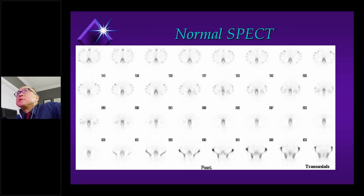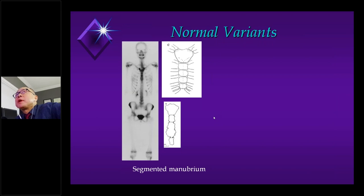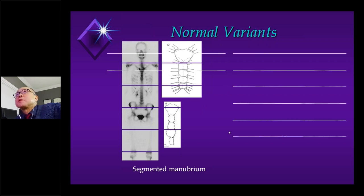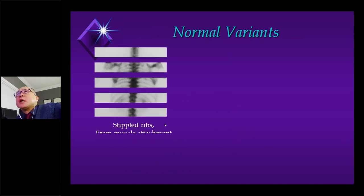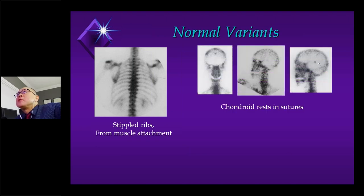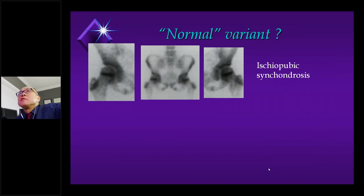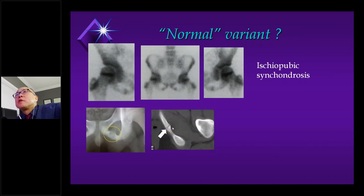We've always been able to perform SPECT imaging — SPECT without CT — which affords some anatomy, such as distinguishing vertebral body from posterior elements. From the planar imaging literature alone there's a ton of information. We all learn normal variants: the segmented manubrium, hyperostosis frontalis interna in women, the symmetrically distributed stippled appearance of the ribs from muscle attachments, the chondroid rest along sutural margins, a photopenic spot in the lower sternum, and the ischial pubic synchondrosis — a normal variant that can nevertheless be traumatized.